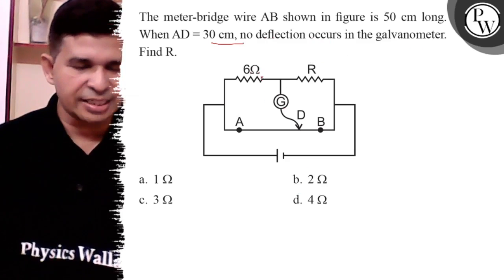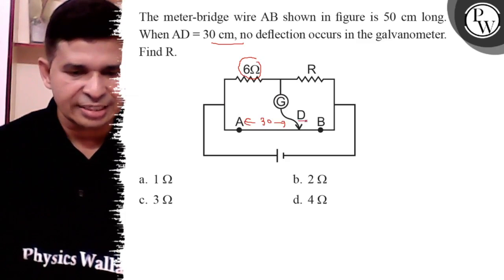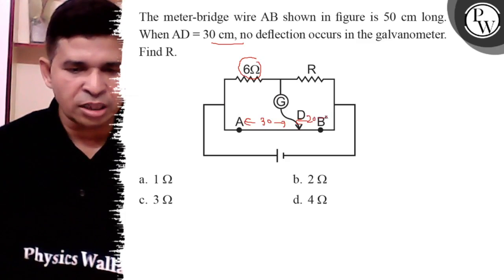In the meter bridge, the 6 ohm resistance corresponds to a length of 30 cm. So definitely the remaining length is 20 cm, because the total length is 50 cm.